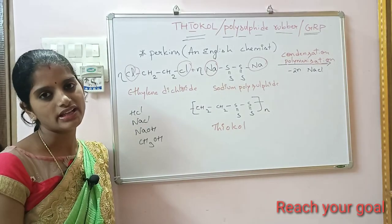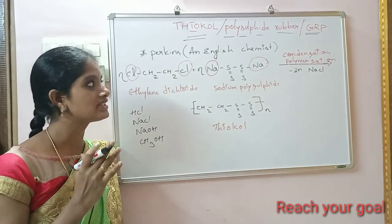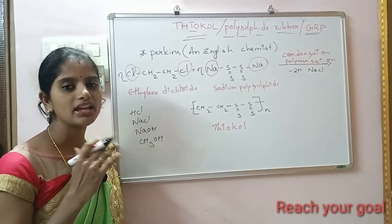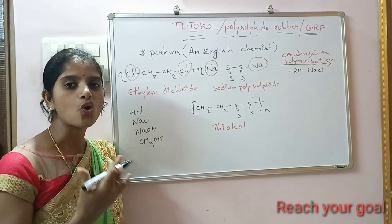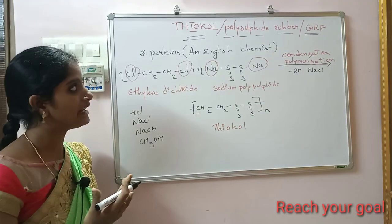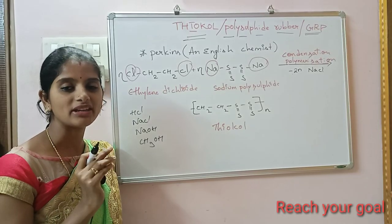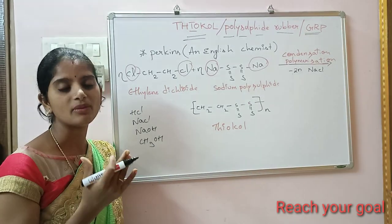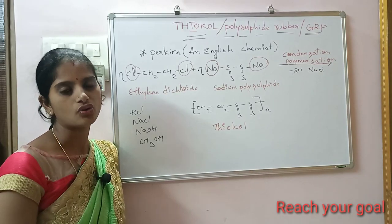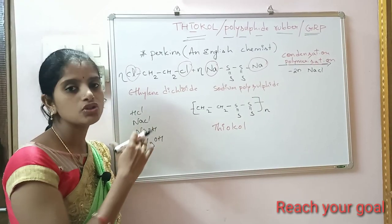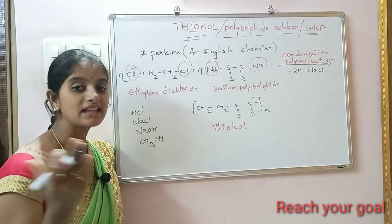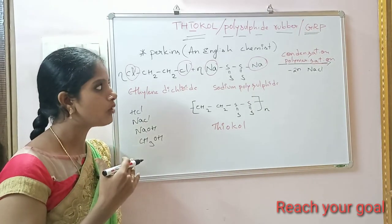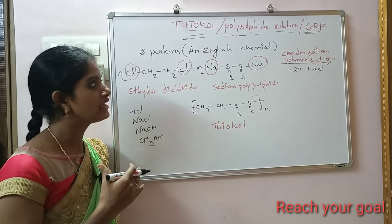Coming to applications: Thiokol mixed with oxidizing agents is used as a fuel in rocket engines. It is also used for making gaskets and printing rollers. I hope you understood this, friends.